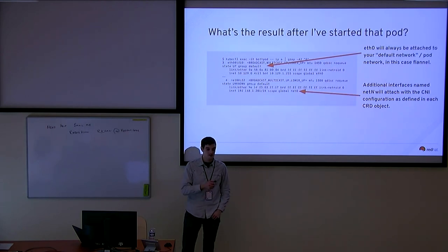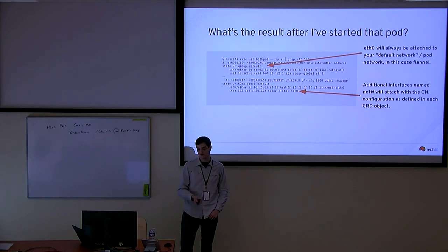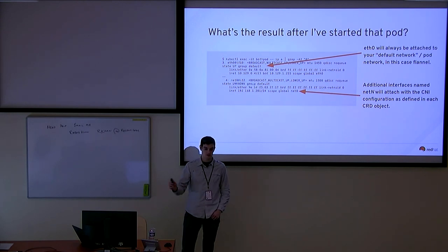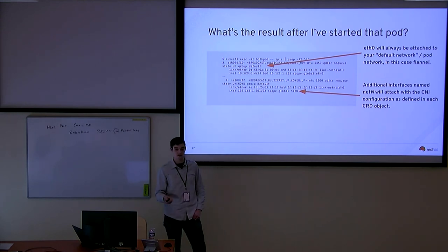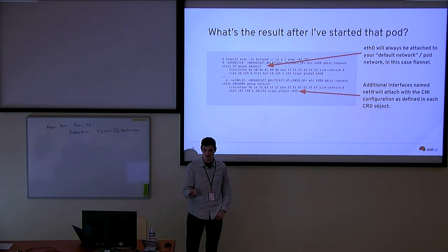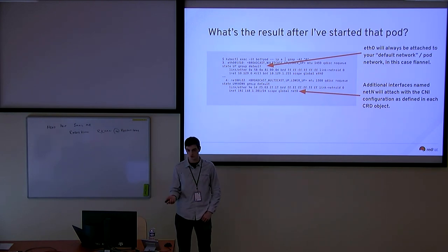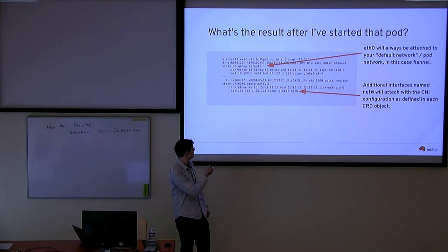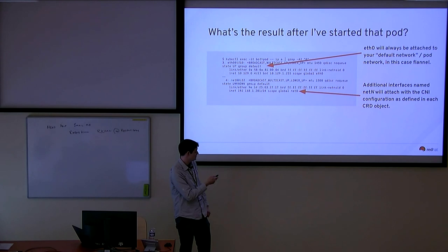You can specify what network interface name inside the pod a given attachment should have, so it's not completely random and your application can expect a certain network interface name. After attaching a pod to multiple networks, the specification defines — and Multus implements — a way to publish this information back to the Kubernetes API so you can inspect it from other applications, management tools, or anything else you want. You'll see the secondary network interface information including the MAC VLAN details.